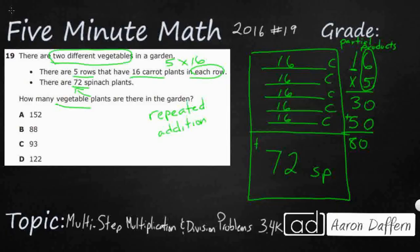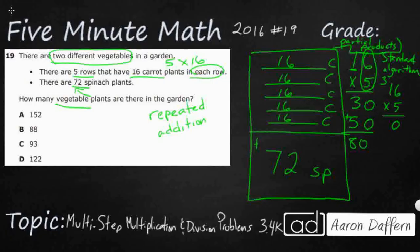Now, how do we do that with the standard algorithm? The standard algorithm is just the normal, quick way. So I'll do 16 times 5: you multiply 5 times 6 again, but you only put one digit down and carry the 3 above the tens place. Then you multiply 5 times 1, which is 5, and add the 3 you carried over — so 5 plus 3 is 8 — giving us 80. So 80 is not our final answer yet because we haven't added in our 72 spinach.